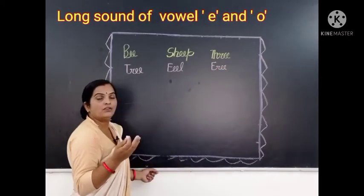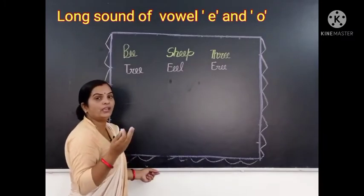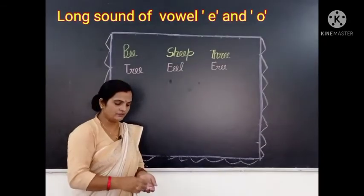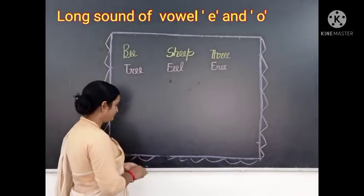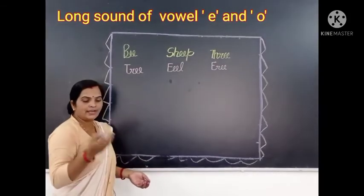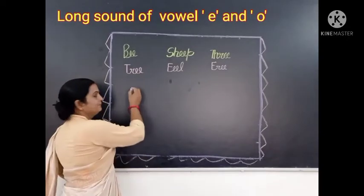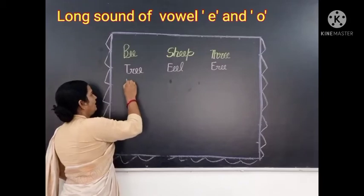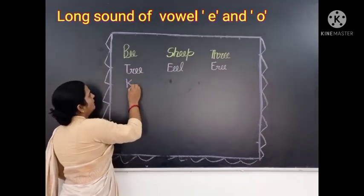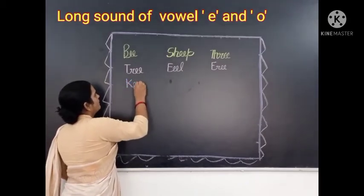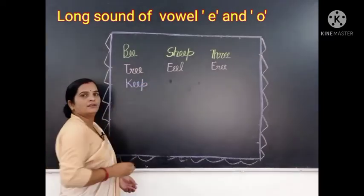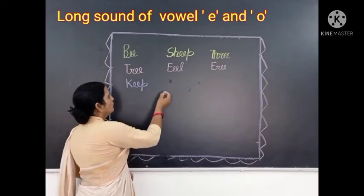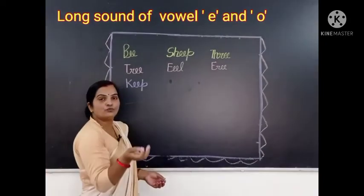This is a long sound of vowel E word. Okay? Now we will write the next word. We will write: Key. K-E-Y. Key. Okay? Now we will write the next word.